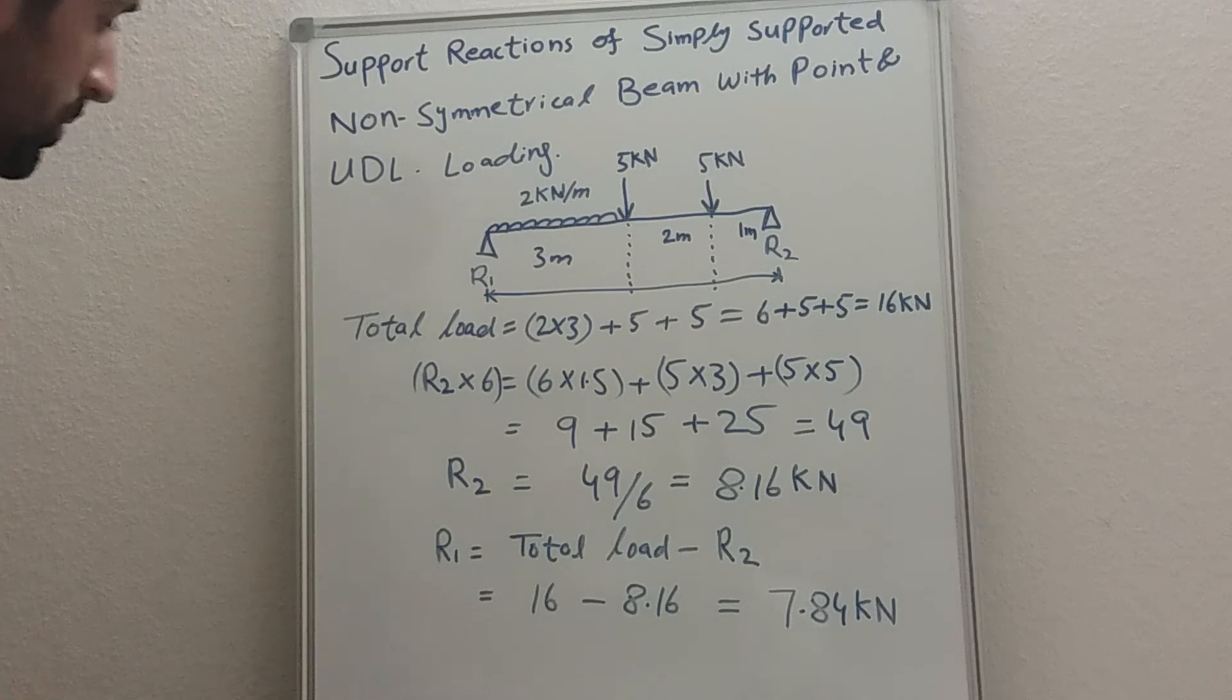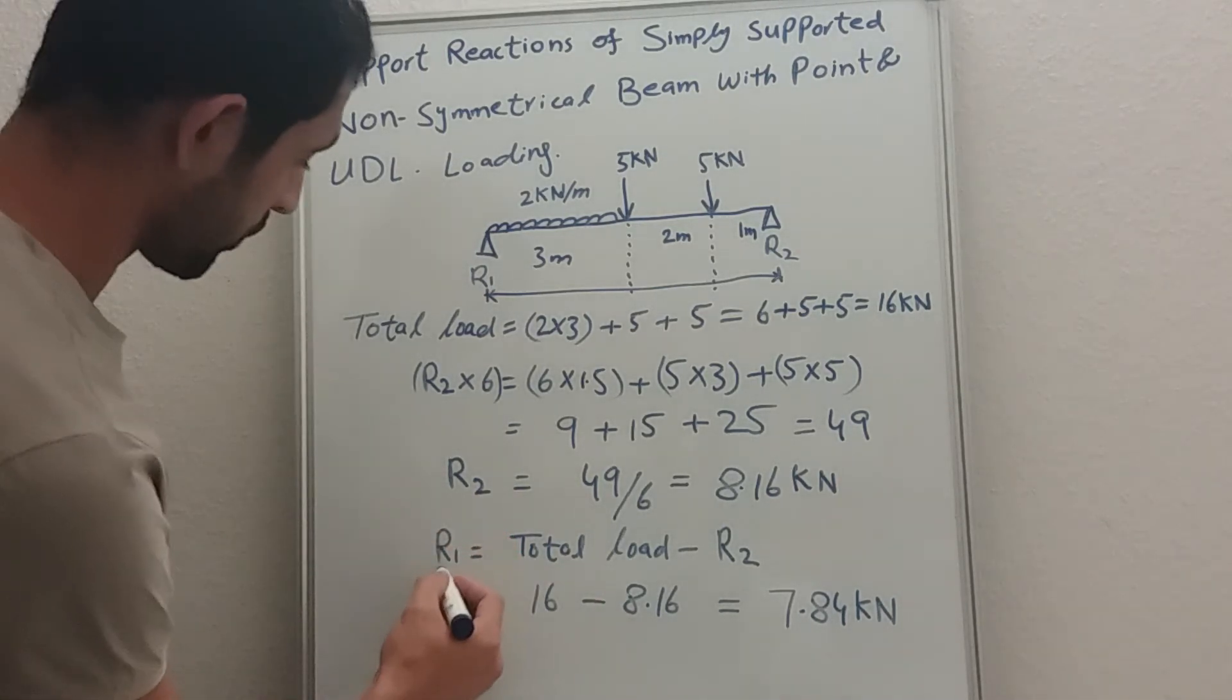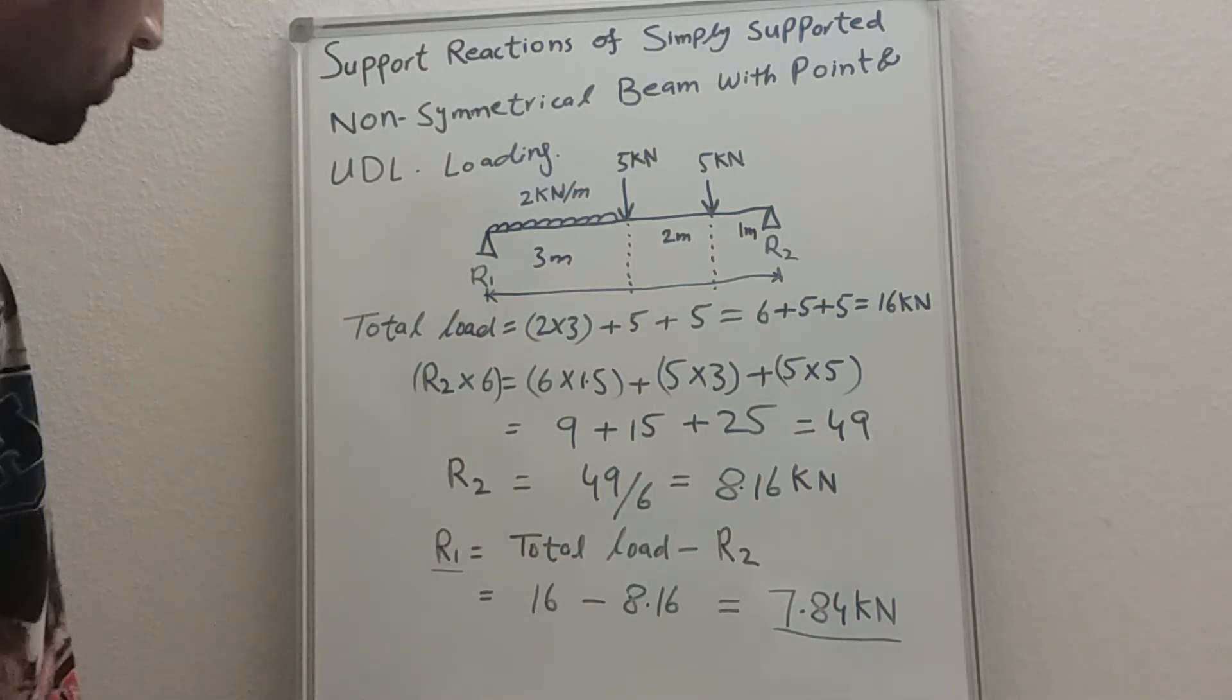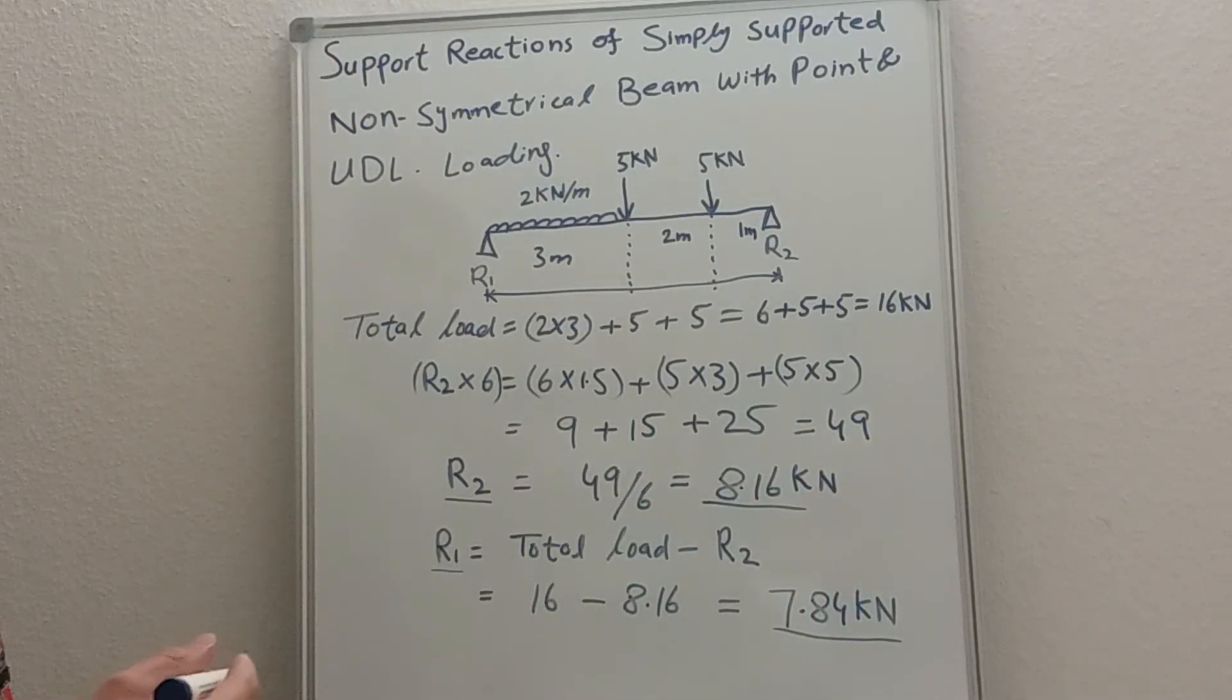Okay, so now these are the reactions. R1 is 7.84 kilonewtons and R2 is 8.16 kilonewtons. So that's it for today, thank you very much for watching my channel and please don't forget to subscribe.